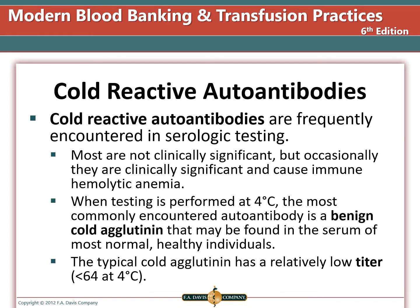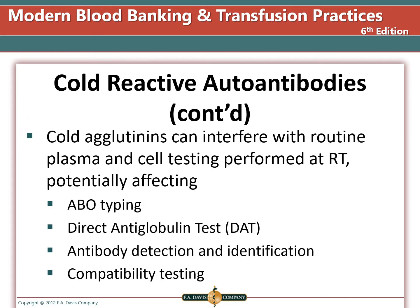Cold reactive autoantibodies are frequently found in serological testing. Most are not clinically significant, but occasionally they can cause hemolytic anemia. When testing at 4 degrees Celsius, the most commonly encountered autoantibody is a benign cold agglutinin found in the serum of normal, healthy individuals. The typical cold agglutinin has a relatively low titer of less than 64 at 4 degrees Celsius. Cold agglutinins can interfere with routine plasma and cell testing performed at room temperature, such as ABO typing, the direct antiglobulin test, antibody detection and identification, and compatibility testing.